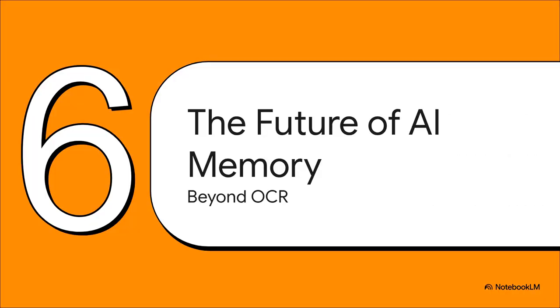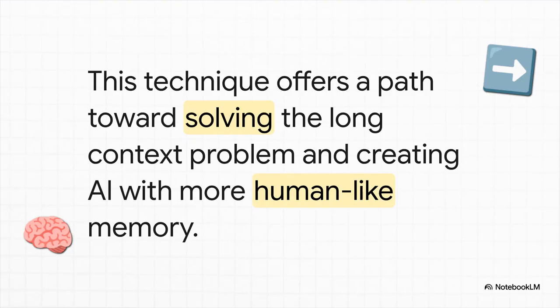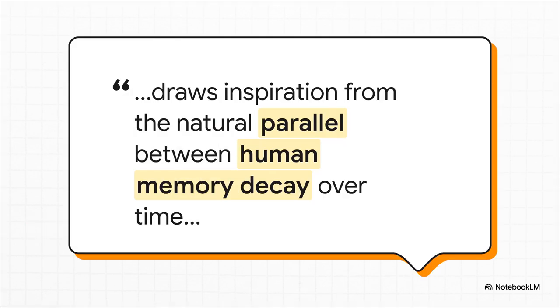So what does this all mean? Why does this matter? Well, this is way bigger than just a better way to do OCR. This clever compression trick could have some really profound implications for the future of AI itself, especially when we talk about memory. Hey, remember that long context problem we talked about? This optical compression could be a way out. Instead of an AI having to hold this massive, expensive text history of a conversation in its active memory, maybe it could start compressing the older parts into these super-efficient visual representations. And this, this is where it gets really mind-bending. The authors of the paper themselves draw a direct parallel to how our own brains seem to work.